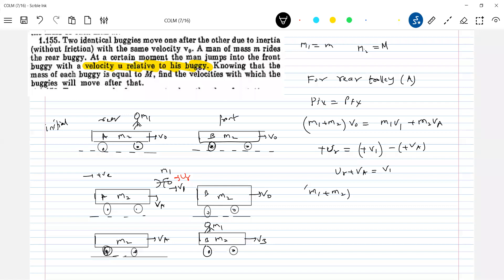m1 plus m2 v0 equals m1 times ur plus vA plus m1 plus m2 into vA. So this is m1 plus m2 v0 minus m1 ur by m1 plus m2.